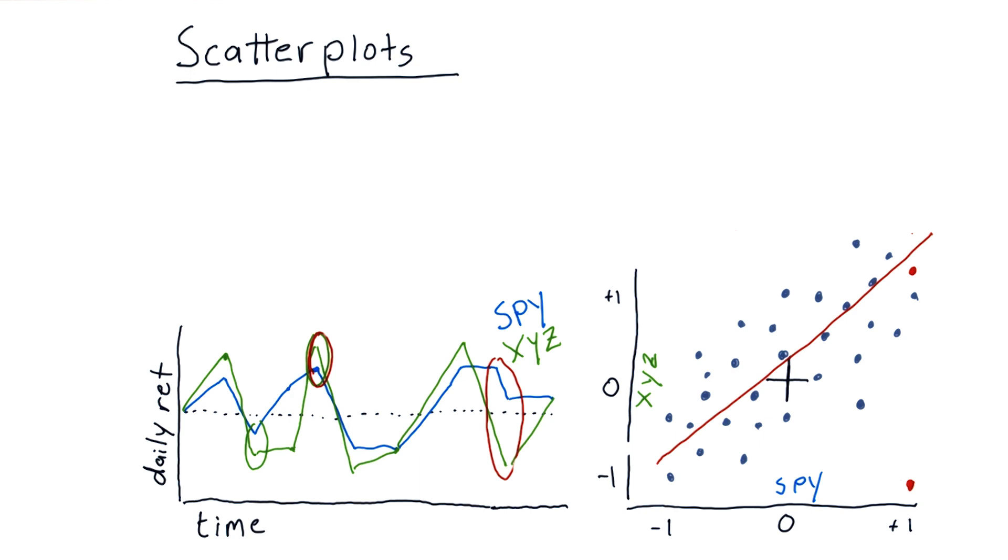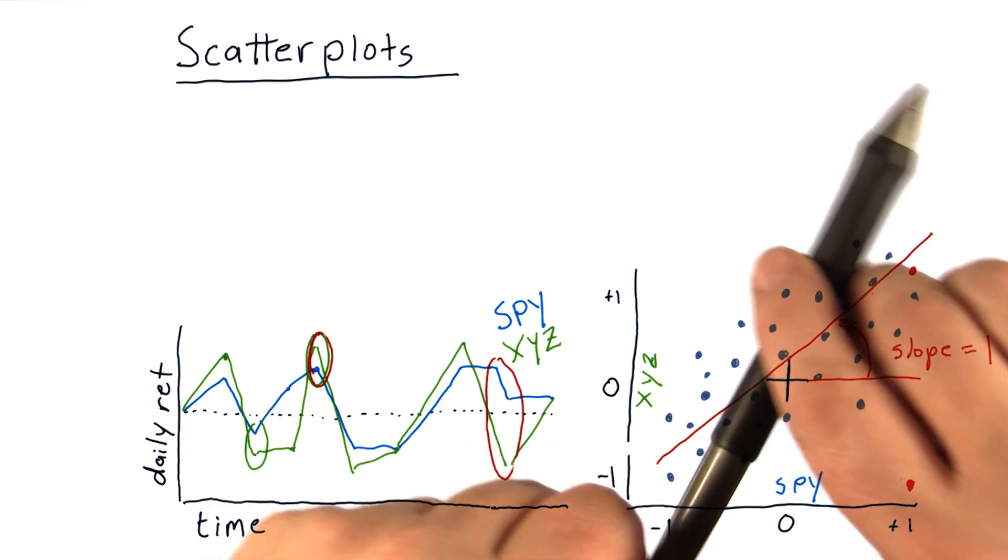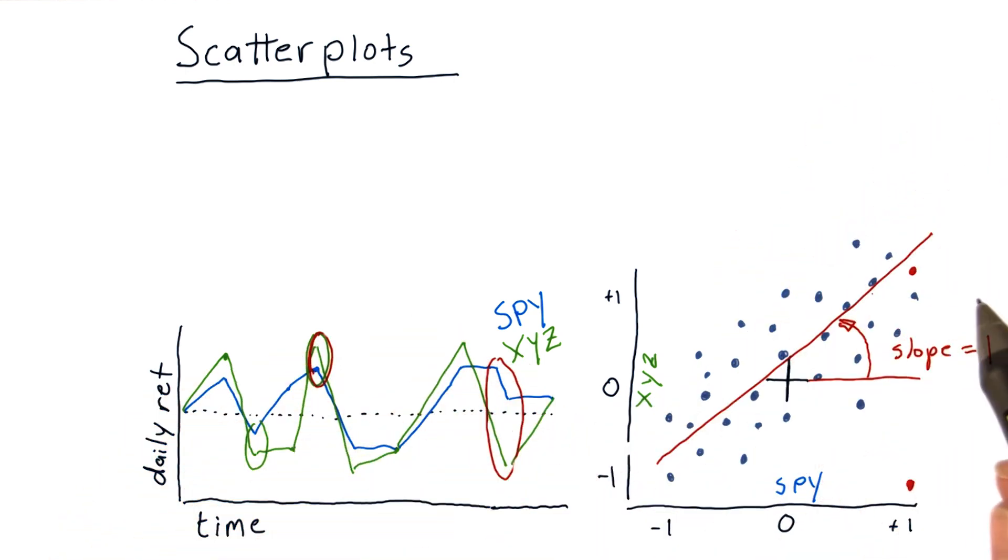And to look at the statistics of that linear fit. One property is the slope. When we fit a line, what's the slope of that line? Let's assume it turns out to be one for this particular stock and its relationship to the S&P 500.